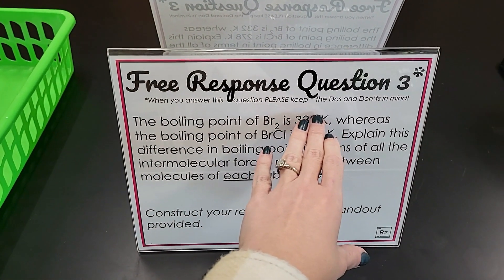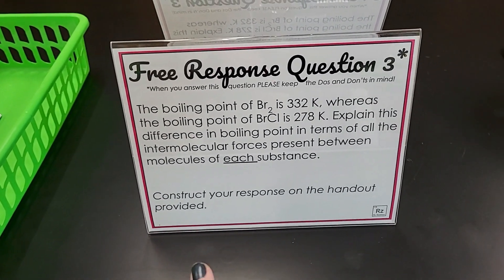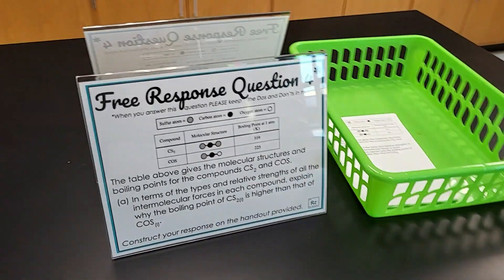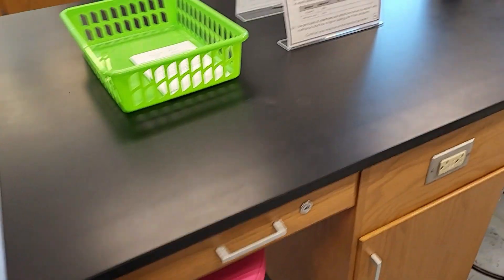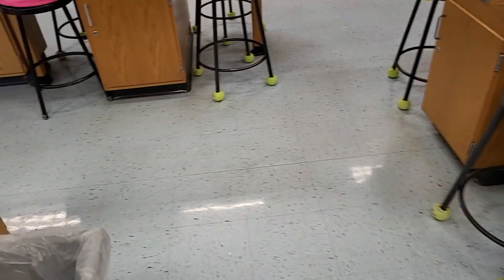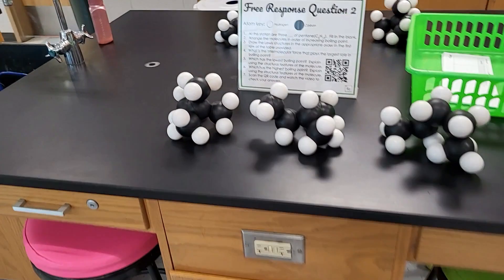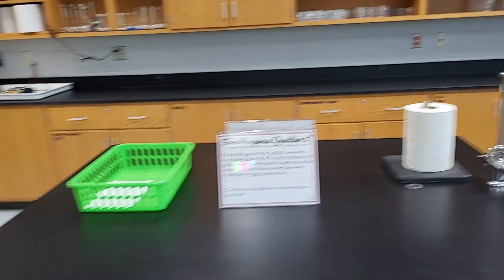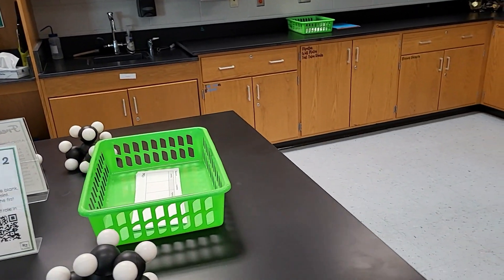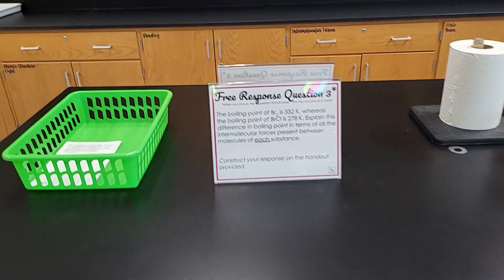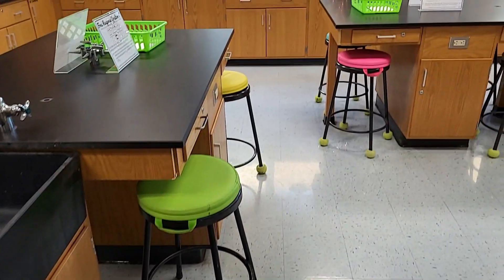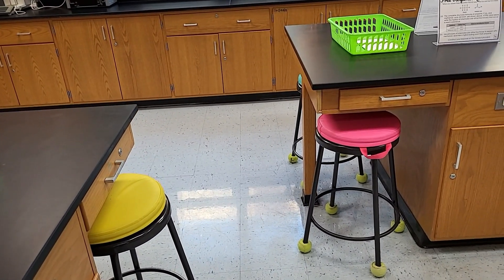The remaining stations are all about free response questions from the AP exam. Students are asked to keep the do's and don'ts in mind as they work through previous FRQs from the College Board. I'll tell my students they need to do at least station one or station two — their choice — and then I require them to do at least two to three FRQ-based questions from the exam. At the end of class I'll show them the scoring guidelines to see how they fared, since this is often a challenging part of the exam.